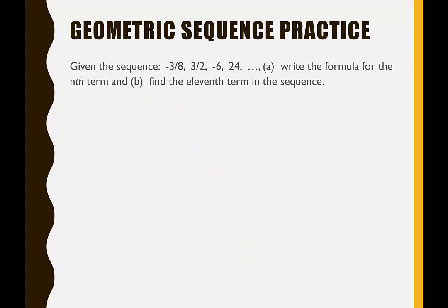Before going over the next example, I encourage you to pause the video and see if you can figure out the formula and the 11th term on your own. For this example, write down the formula: a sub n is equal to a sub 1 times r to the n minus 1. For part A, we only need to fill in a sub 1 and r. A sub 1 is negative 3/8.